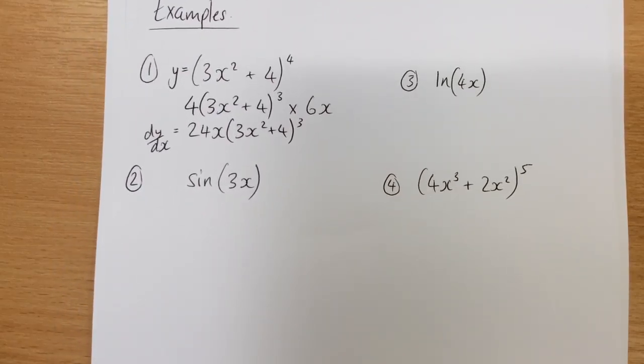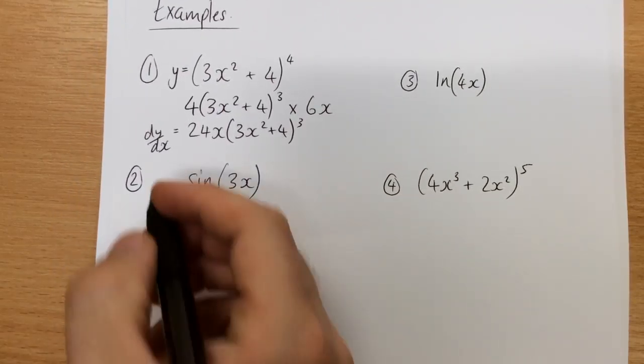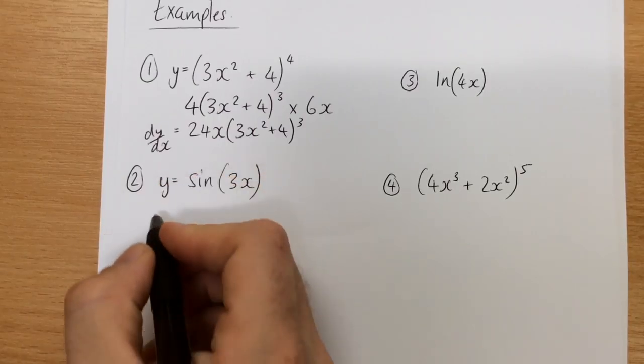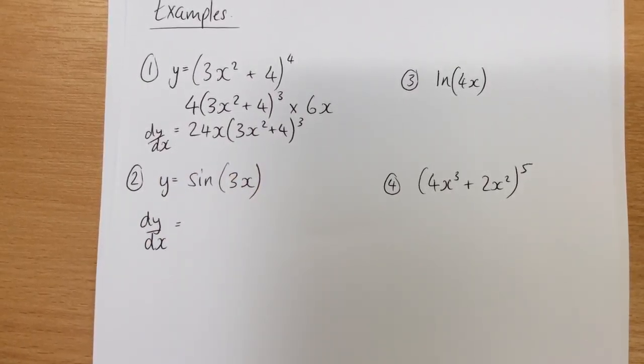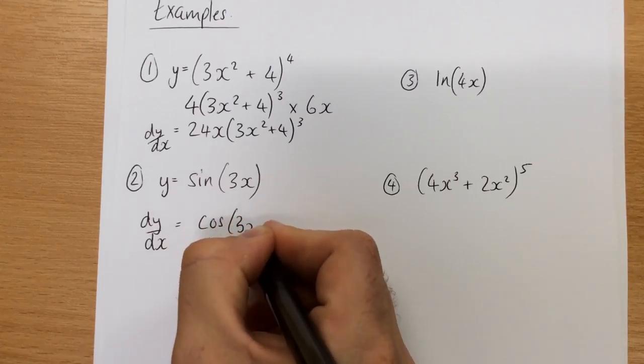The second example then with trig, it works exactly the same way, so if y equals sine x to find dy by dx, differentiate as you would if it was just sine of x, what does sine differentiate to? So, sine changes to cos, so this becomes cos 3x when I differentiate it.